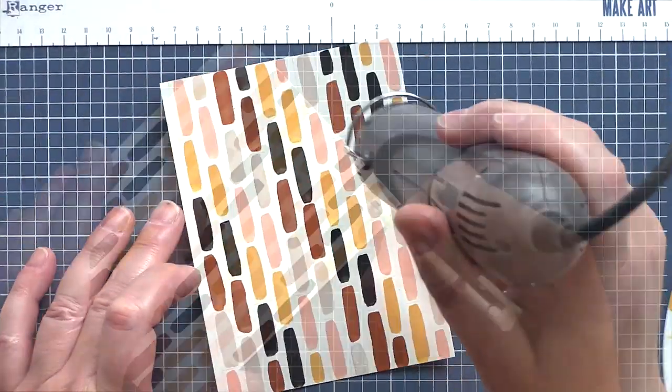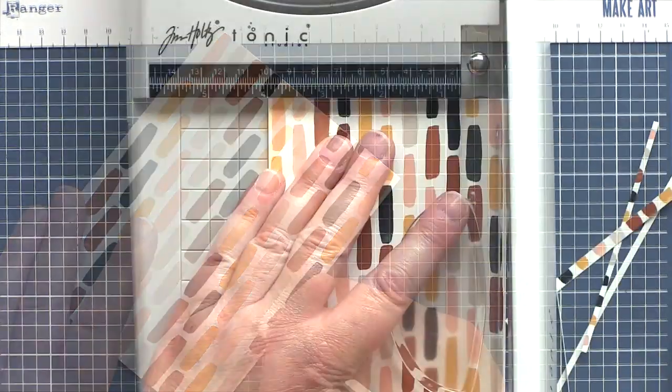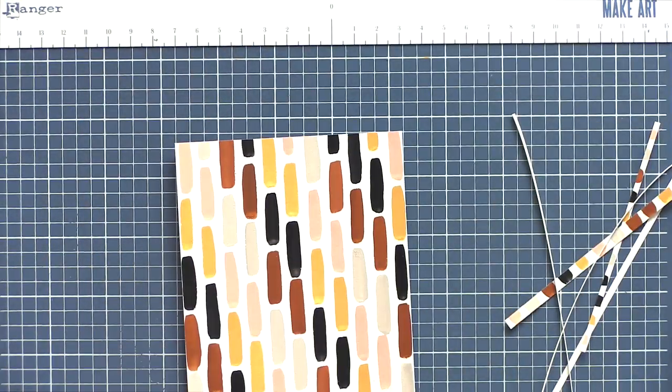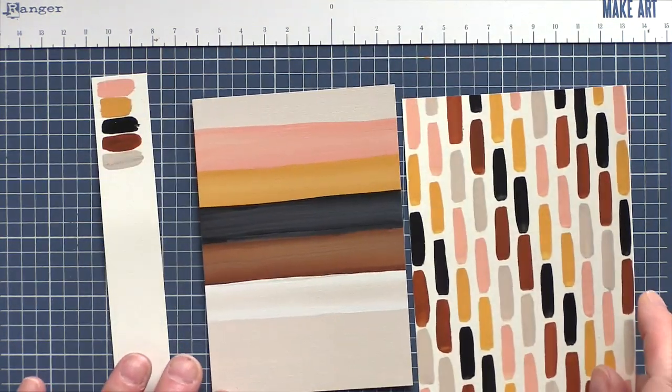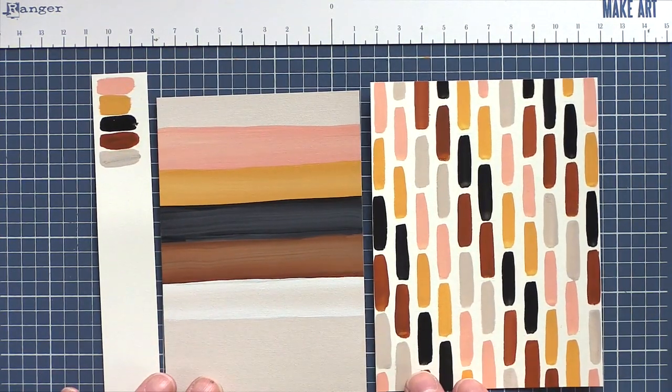I dried the panel and then went in with a small Tombow mono eraser to remove the last of the pencil lines. And there's my second simple stripe background. Simple as long as you can count to five, that is.